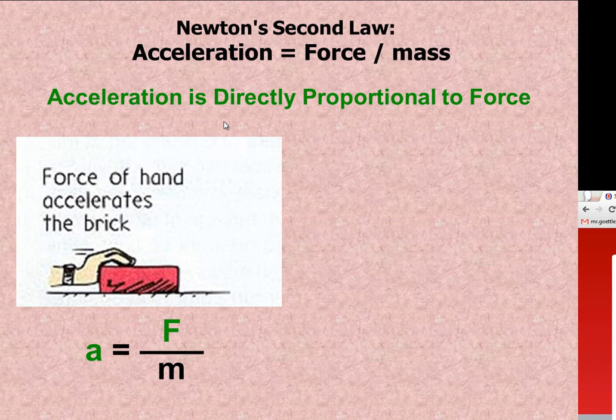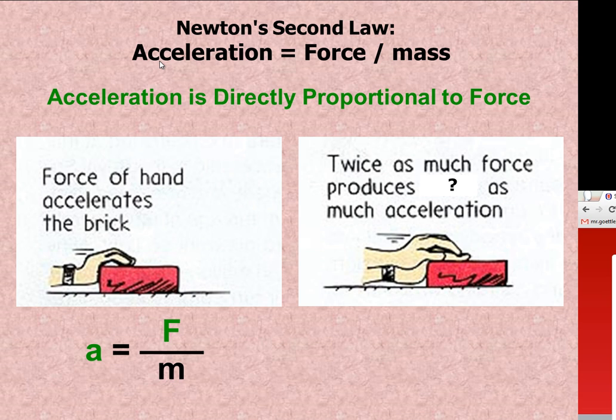Let's take a look at these examples here. So we have a hand pushing a brick. We can say that acceleration is directly proportional to the force. What if we have two hands exerting twice as much force? You will get blank as much acceleration. So say out loud what you think the answer will be.